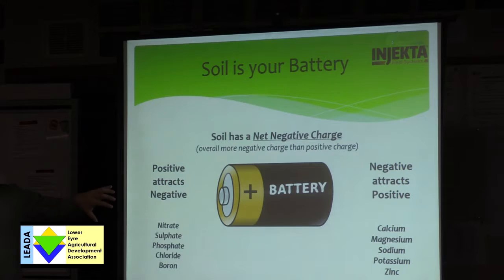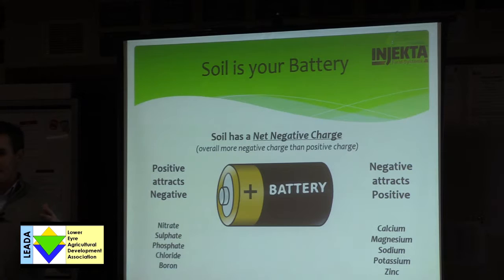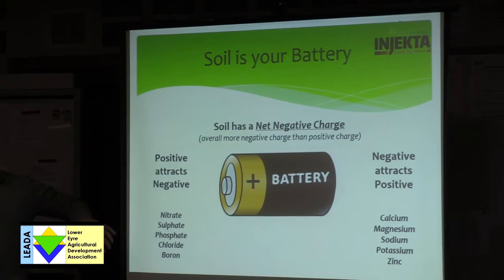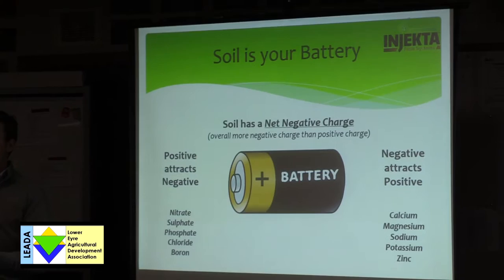Once you understand how your nutrients are charged — either positive or negative — and then you look at your cation exchange capacity, which is the overall size of your bank account's capacity to hold your nutrients, you can start working out why you need certain nutrients early or late, or what's going to be the first limiting nutrient if water's limiting. It all comes back to your battery.